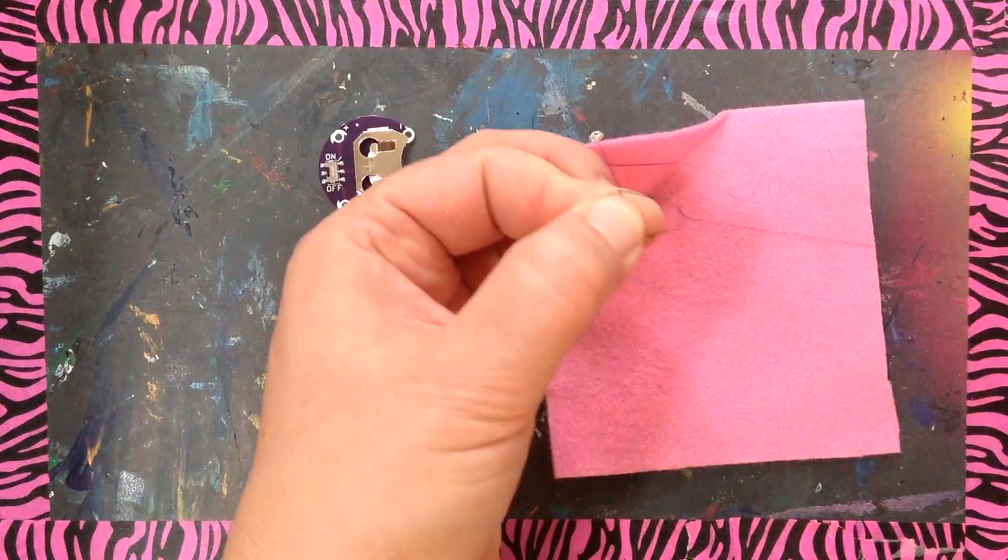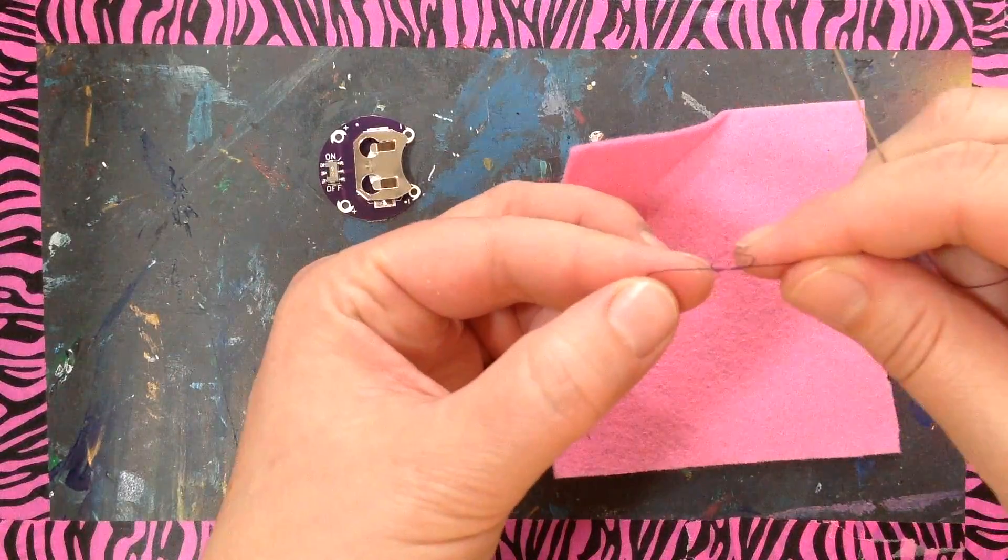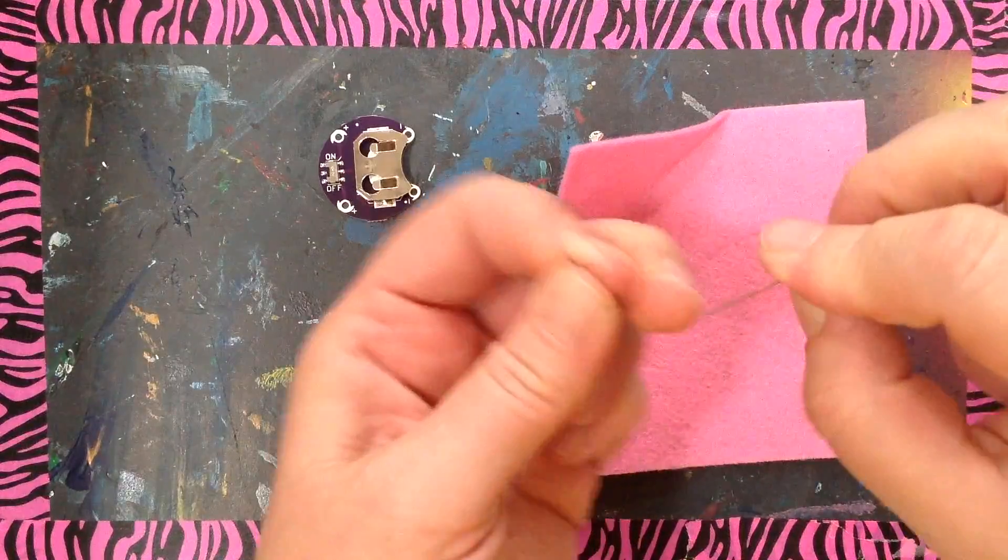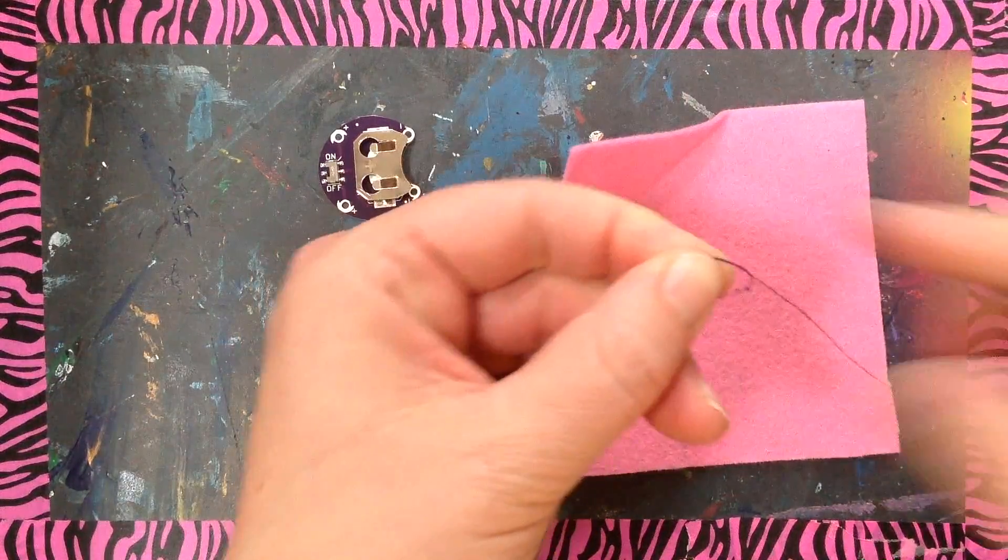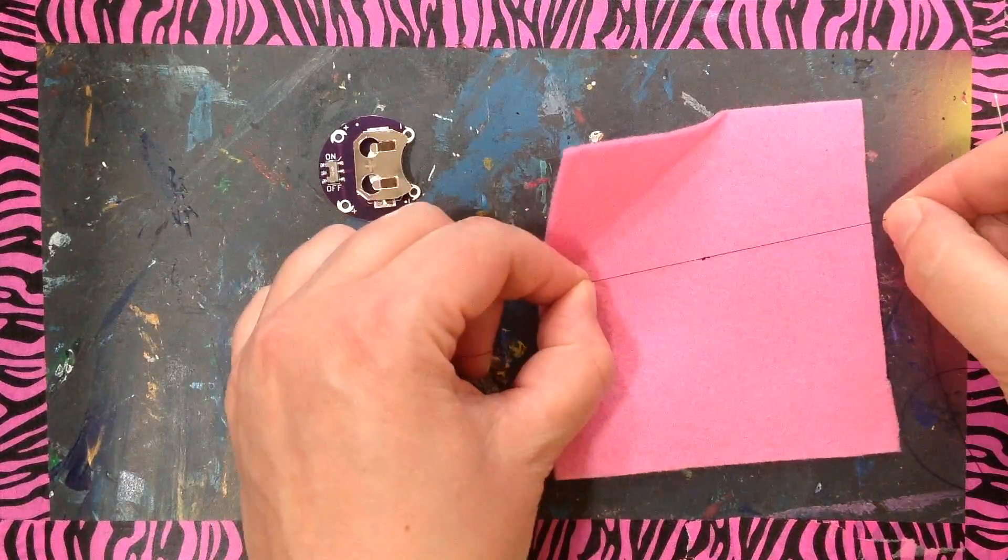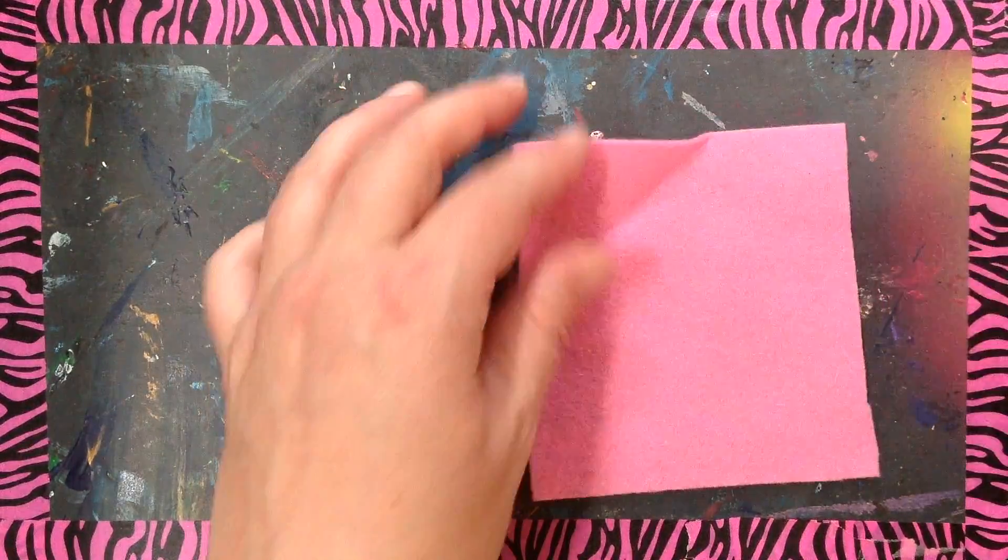So I'm just going to try to tie a knot on top of the other knot. Sometimes it takes me a couple of tries, but it also makes a bigger knot. So I'm tying it in a slightly different manner. You should tie it however works for you. Now that knot, you can actually see it looks bigger.